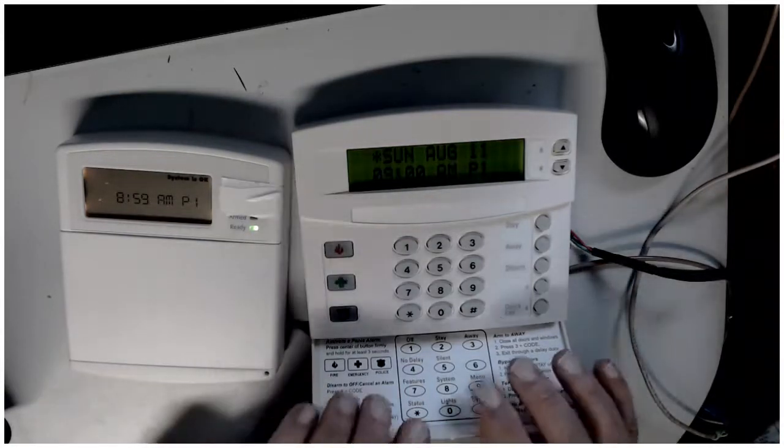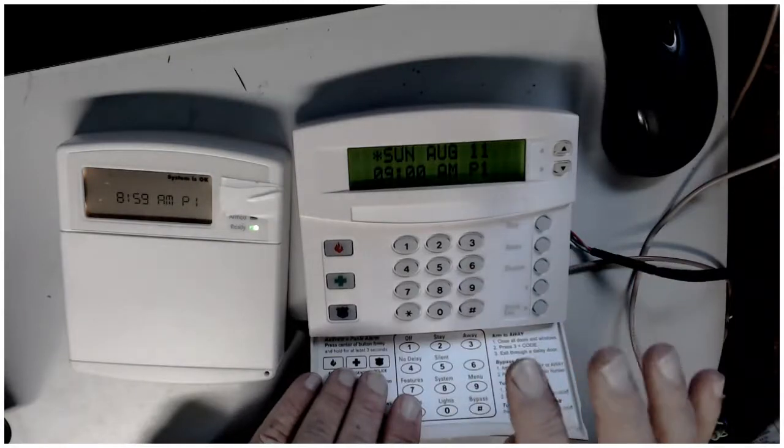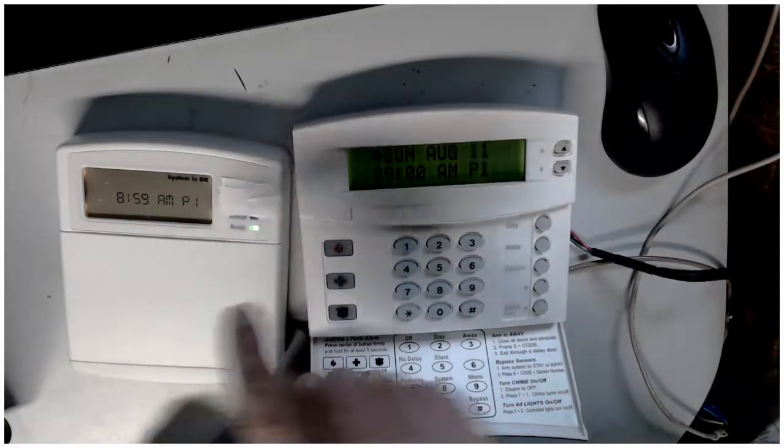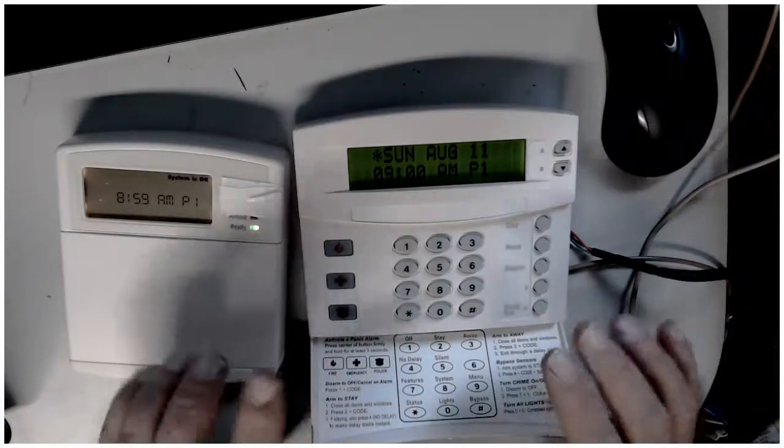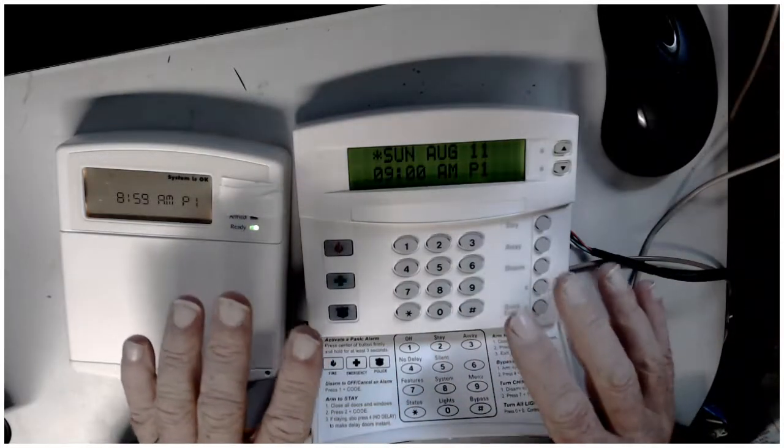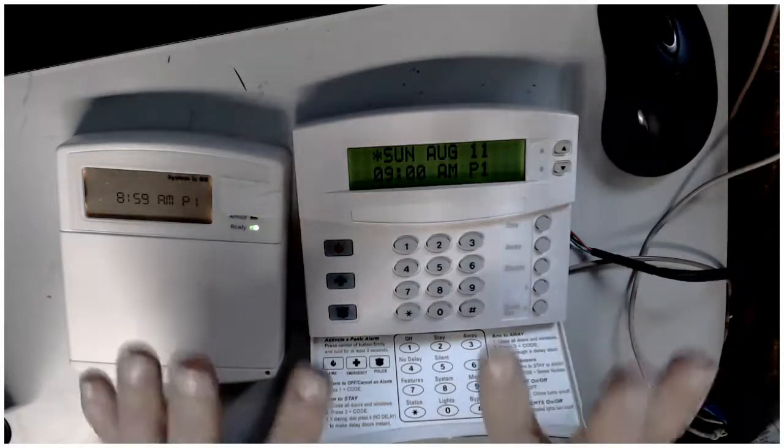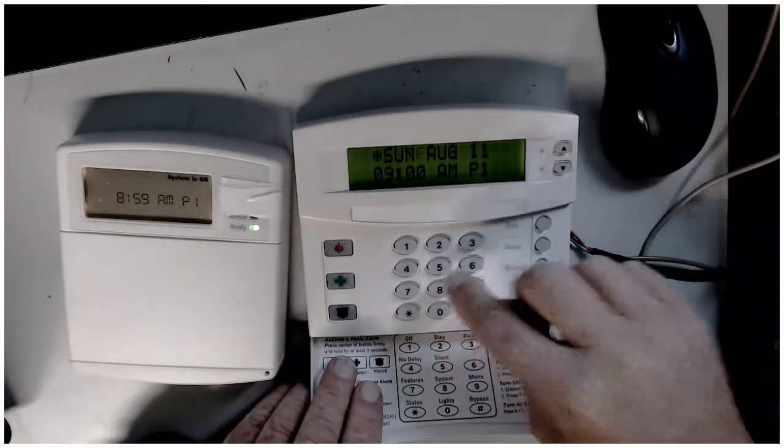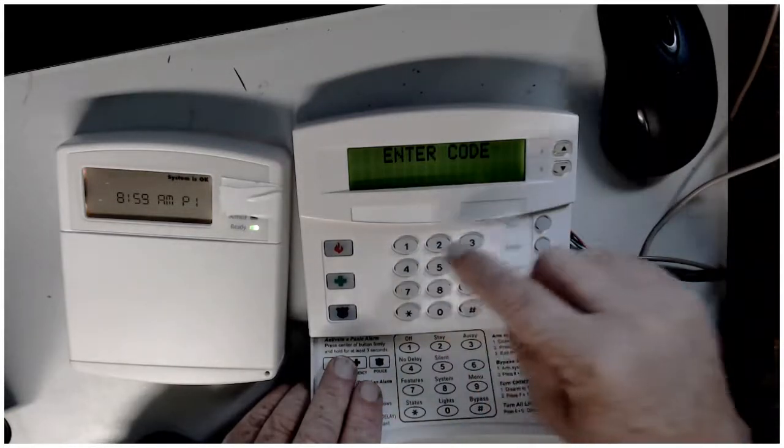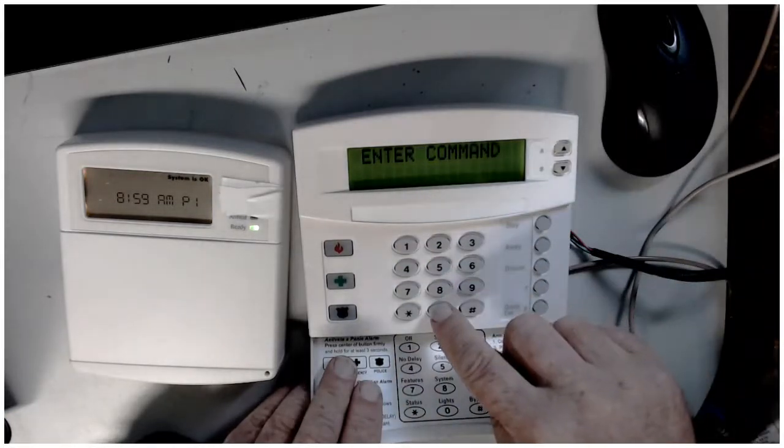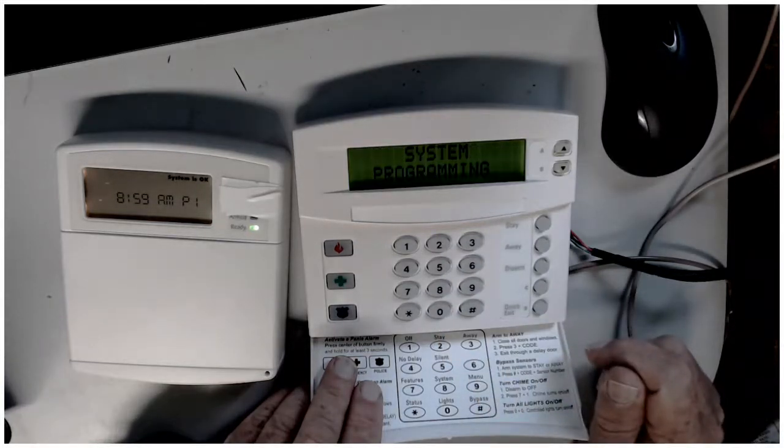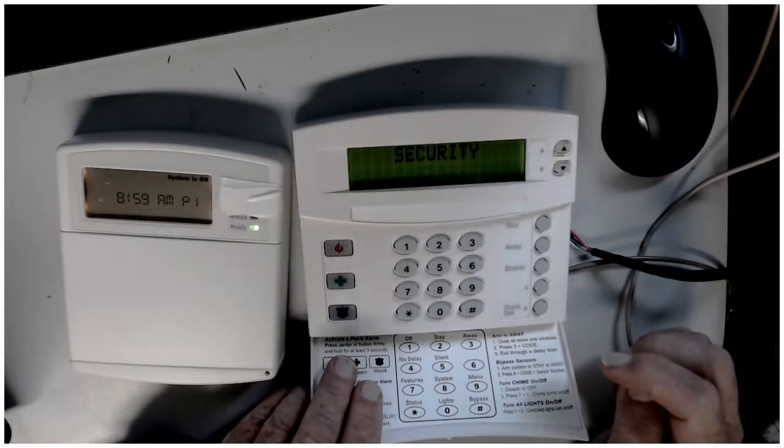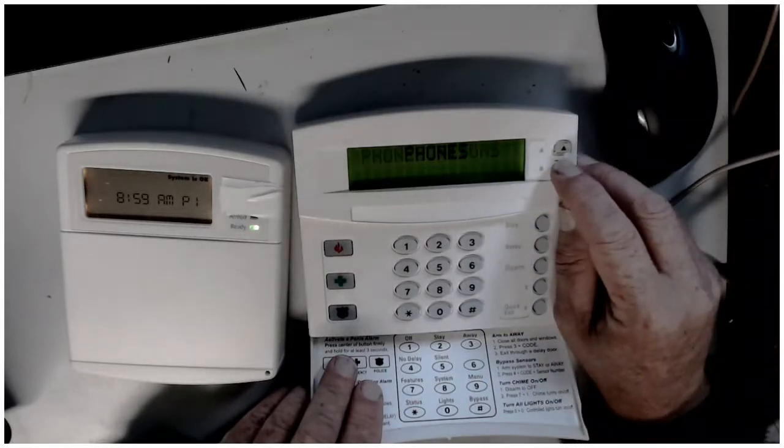So now what you have to do is you have to go into program, go to accessory modules, and you have to delete this off of the system. So I have other YouTube videos out there on how to get into program. So I'm just going to quickly get into it. So again you hit eight, punch in the installer code. The command is zero zero. System programming and you hit the pound, say yes, and then you're looking for accessory modules.